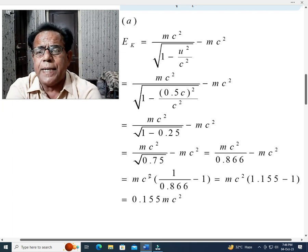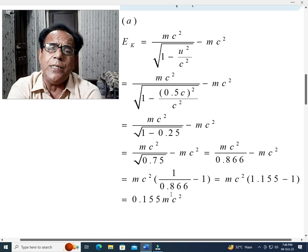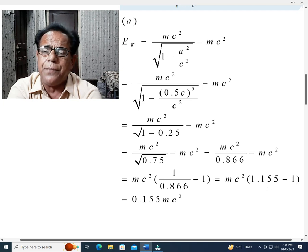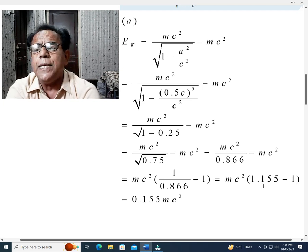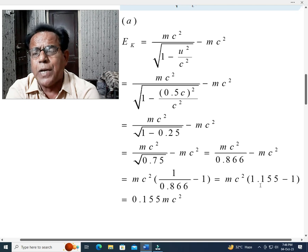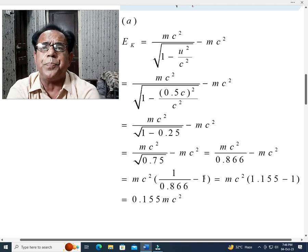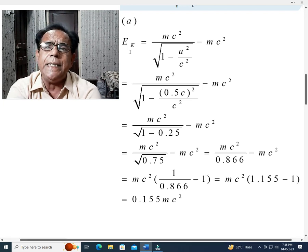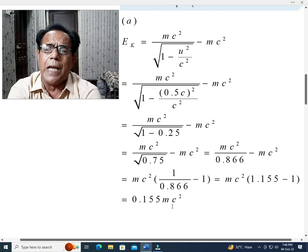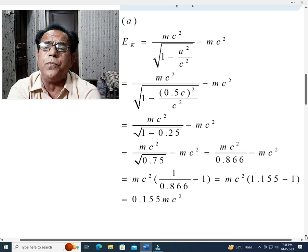Hence, mc squared into 1 over 0.866 minus 1. This step takes the form as mc squared into when we divide 1 by 0.866, we get 1.155, and when we subtract 1 from 1.155, then we get 0.155. Hence, kinetic energy Ek will be equal to 0.155 mc squared, because we have to give the answer in terms of mc squared.